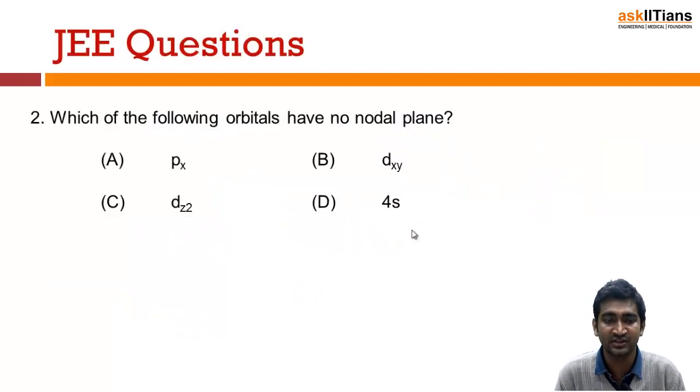Next question: which of the following orbitals have no nodal plane? If I go to the slides which I just showed you in discussing the orbitals, imagine what you were seeing there. Where were you finding nodal planes? Of course it is there in the px, which has two dumbbells and one nodal plane. In dxy also. But in dz squared there is no nodal plane, so this is the correct answer. Also for the s orbital, it also doesn't have the nodal plane. So both C and D will be the correct answers.